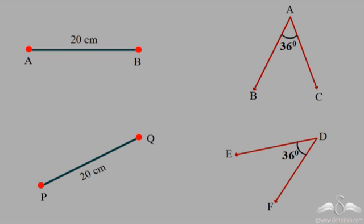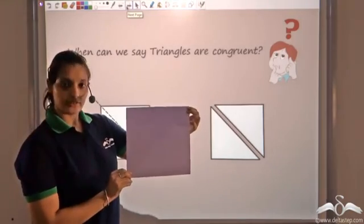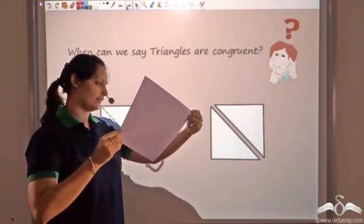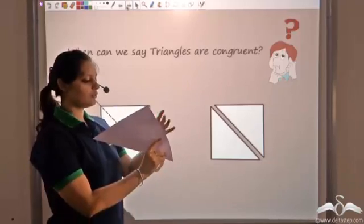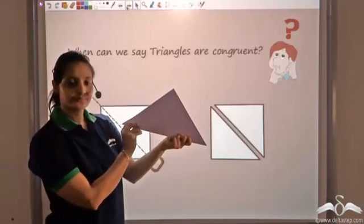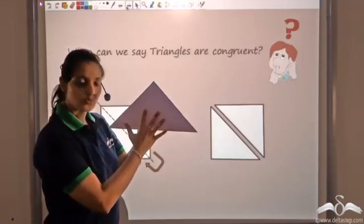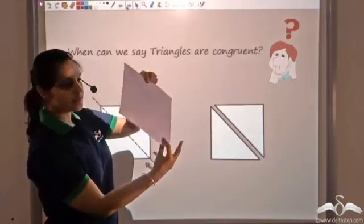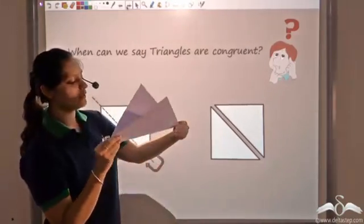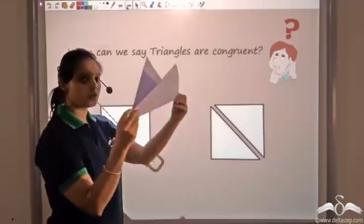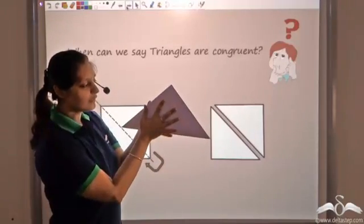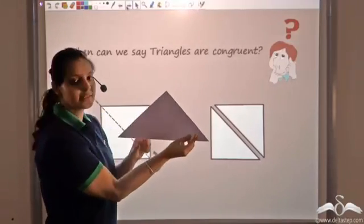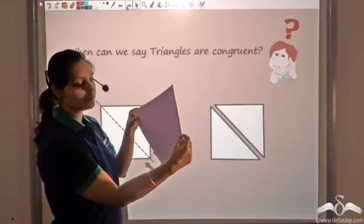Now we have seen when lines are congruent and when angles are congruent. Next, let us see when triangles would be congruent. Let us take this square sheet and fold it along its diagonal. Do you see that you get a triangle? In fact not just one — you get two triangles which are perfectly overlapped one over the other. These two triangles are perfectly overlapped and hence I can say that these two triangles are congruent.